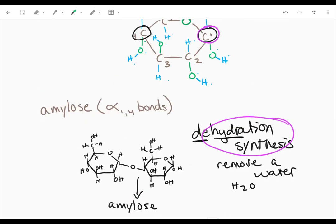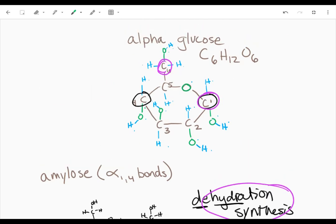All right, so now what we're going to do is we're going to build starch. Starch isn't just made of tons of alpha glucose molecules—thousands and thousands. Starch is made of not only amylose but also amylopectin.